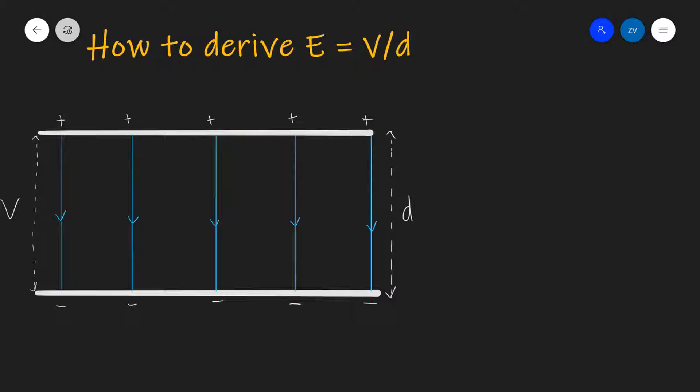In order to do so, let's picture a little electric field. We have two plates, a positive plate and a negative plate. The electric field lines, as you can see, are uniformly spaced and going from positive to negative. The potential difference between the plates is V and the distance between them is D.